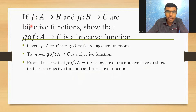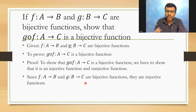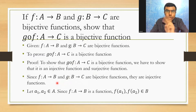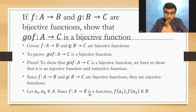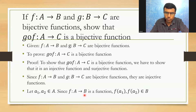We are given that f:A→B and g:B→C are bijective functions. Since they are bijective, they are also injective and surjective functions — I am going to use the injective condition now. I am going to take two elements a1, a2 belonging to A. Since f:A→B is a function, f(a1) and f(a2) belong to B. Their images naturally belong to the codomain, so f(a1) and f(a2) belong to B.